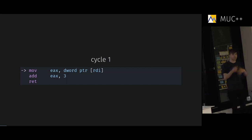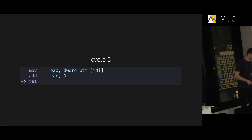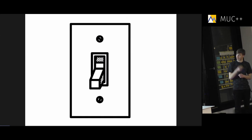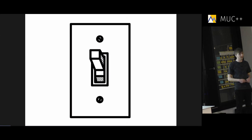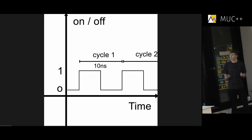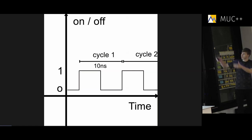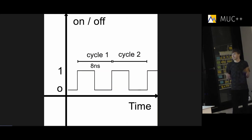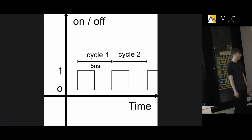Let's imagine we simulate this execution — first cycle, then the second cycle. How could a CPU execute this code faster? Imagine every time we flick the switch, something happens — so let's flick the switch faster. That's a very basic idea, but it makes everything faster. Imagine this digital signal going from on to off; a cycle takes 10 nanoseconds, and if we reduce that delta, a lot of things go faster.